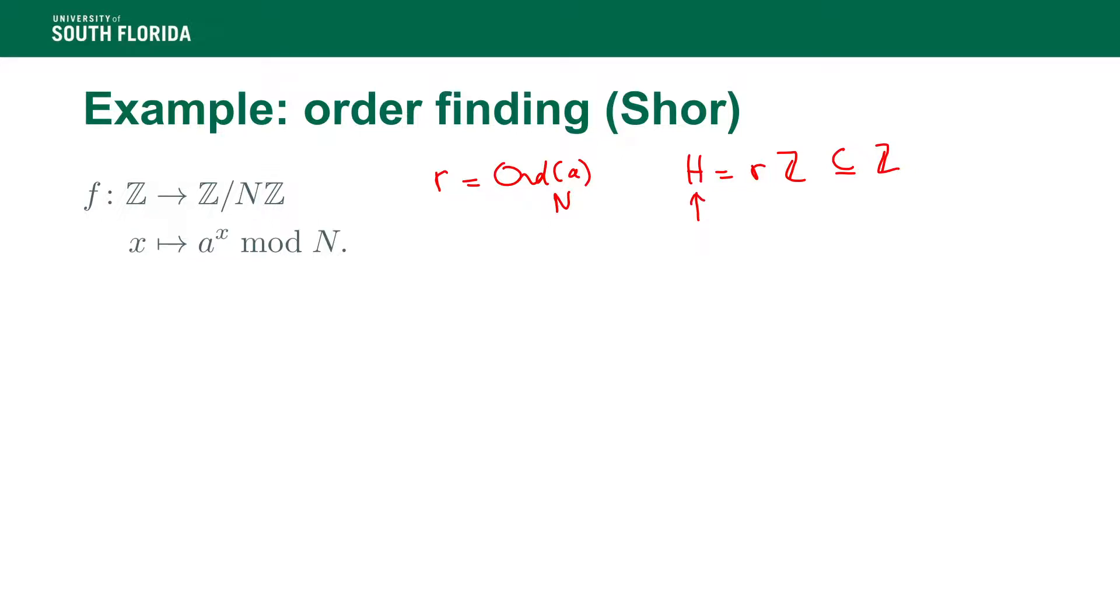Now the question is, how does F map every different coset modulo H? So we need to argue here that F is constant on the same coset and F maps different cosets to different values. First, let's assume here that X1 is congruent to X2 modulo RZ, which is the same thing as saying that X1 plus RZ is equal to X2 plus RZ. Now, how does this translate into the evaluation of F?